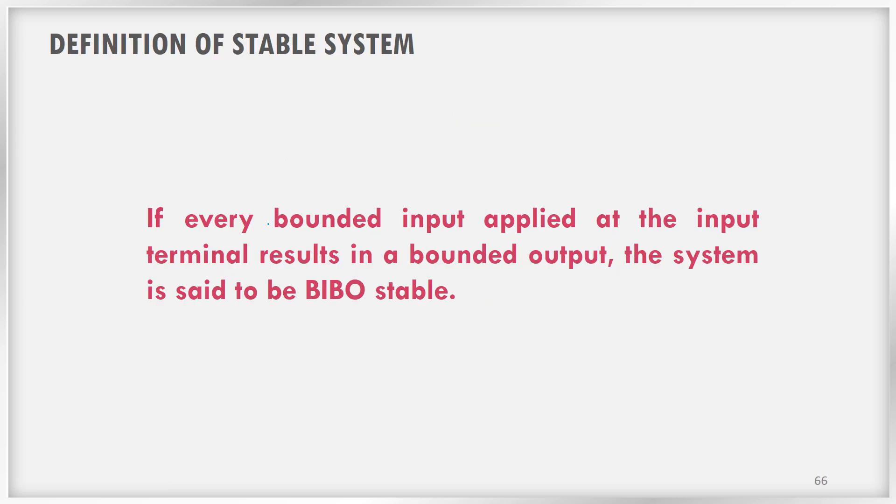So formally, we can define it like this. If every bounded input, this is very important, you should not give unbounded input and then don't complain that it is an unbounded output. So if you are giving a bounded input, then at the input terminal results in a bounded output. If you are giving a bounded input and you are getting a bounded output, then the system is BIBO stable, otherwise the system is not BIBO stable, we can call it as an unstable system.